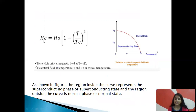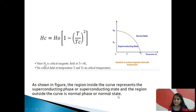Now let's see the relation between the critical magnetic field and the critical temperature. The critical magnetic field HC is given by HC = H0 × (1 − T/TC)², where H0 is the magnetic field at which the material completely loses its superconducting property. As shown in the figure, the region inside the curve represents the superconducting phase, and the region outside the curve is the normal phase. This graph represents the variation of critical magnetic field with temperature.